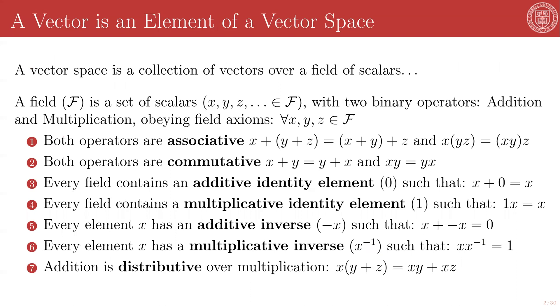What is a vector? Well, a vector is an element of a vector space, right? What is a vector space? A vector space is a collection of vectors over a field of scalars, and here we run into trouble because what the heck is a field of scalars?